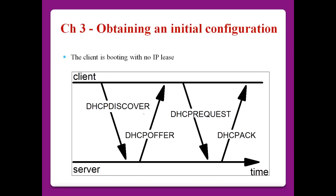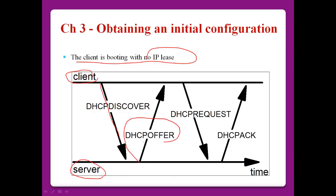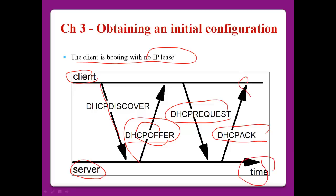Obtaining an initial configuration: at first the client boots with no IP lease, so it sends a DHCP Discover to get a DHCP Offer. After that, the client sends a DHCP Request to the server regarding the offer from the server. If the server sends the DHCP ACK packet back to the client, then the client can use the new IP address with the network settings.